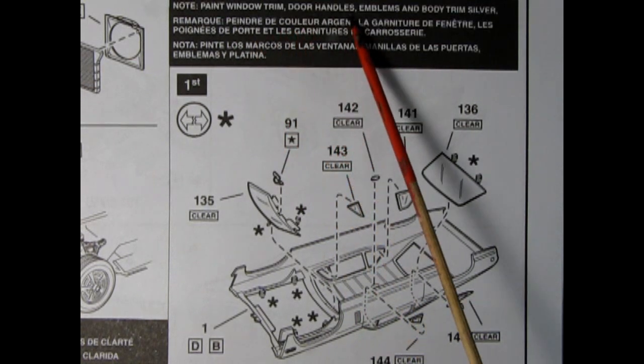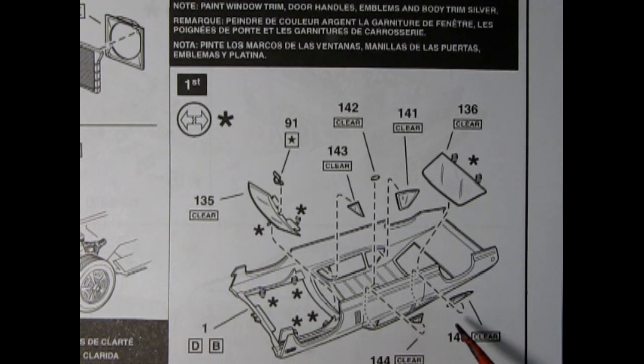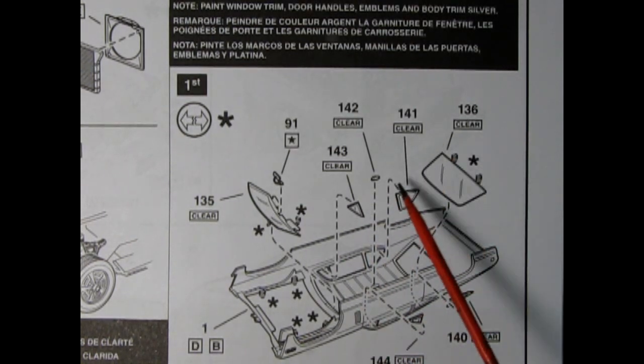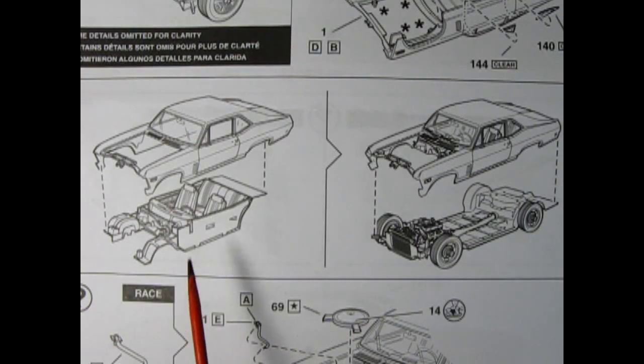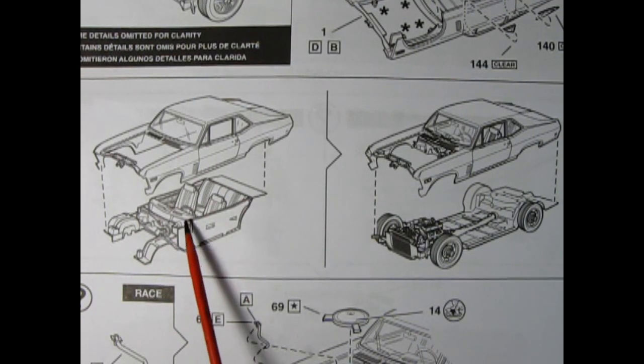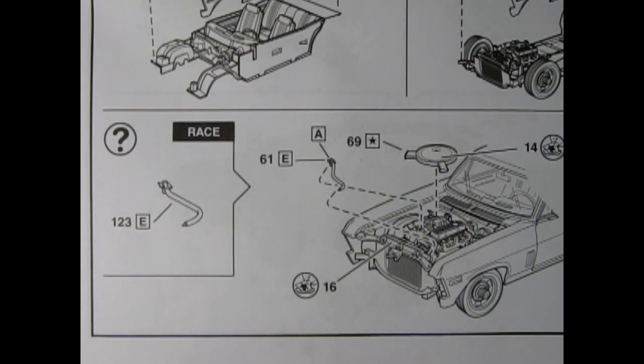Getting into the body assembly, it says note: paint window trim, door handles, emblems and body trim silver. Here we have the body upside down and we're adding in all our windows as well as the dome light and our rear view mirror. Once that step is complete, we can then put our assembled interior up into the body and then take the body and drop it onto our chassis.